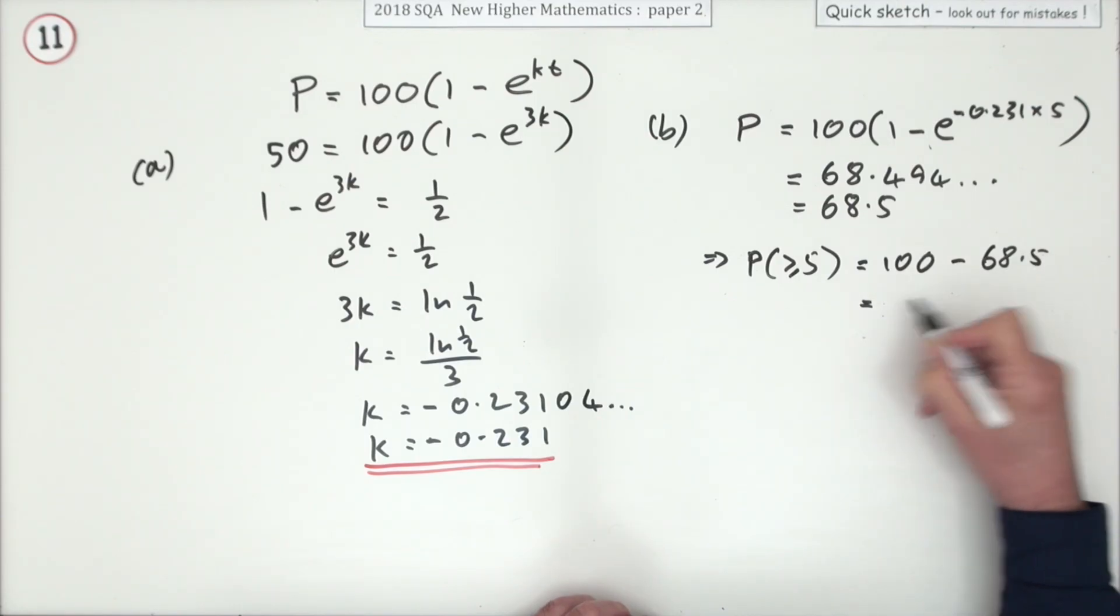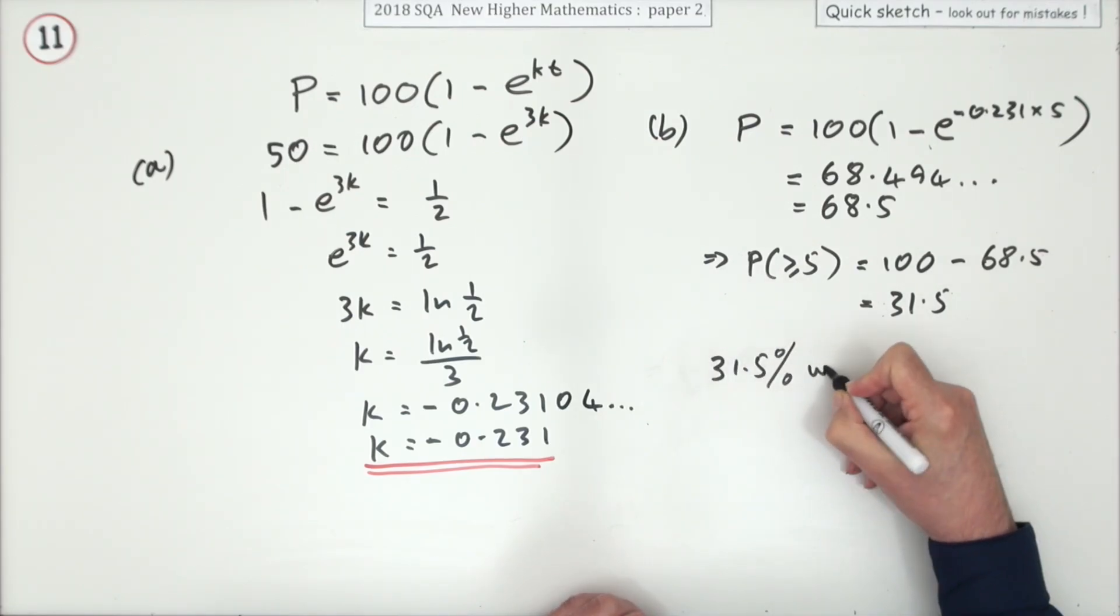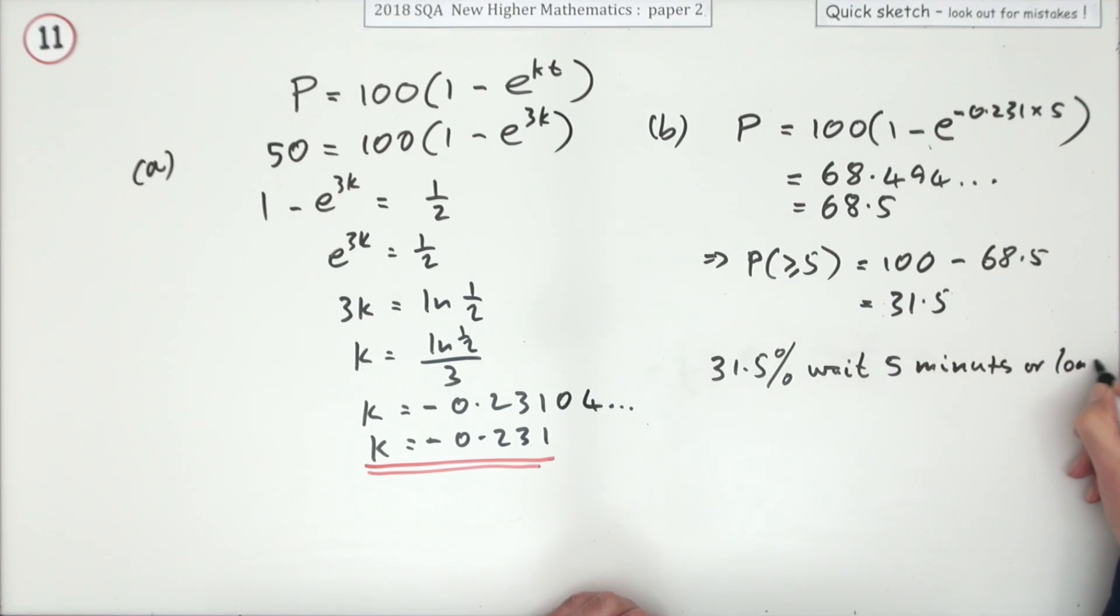So it'll be 31.5%. But P stood for the number of percent, so I'll just finish it off with 31.5% wait five minutes or longer. There we are.